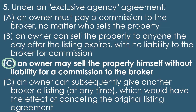Option D — giving another broker a listing at any time to cancel the original — does not apply to exclusive agency; in an open listing you can, but that wouldn't negate the original. The best answer is C. To clarify option B: when a listing expires, the owner can sign a new listing with a different agent or sell themselves on most listing types, unless a broker protection clause applies — but that's not unique to exclusive agency.